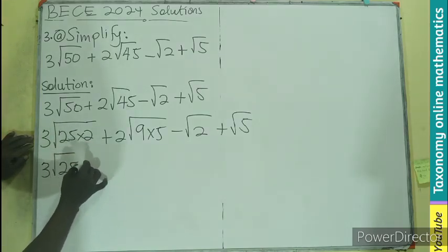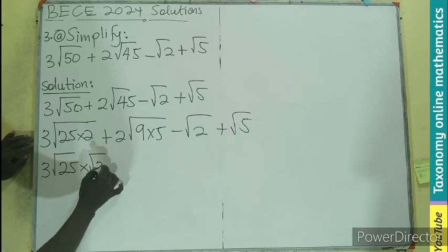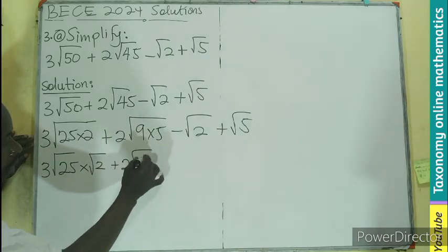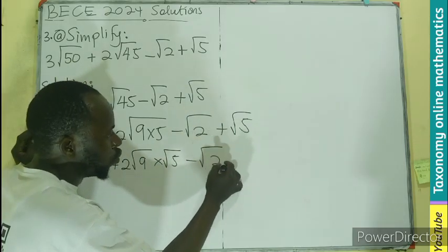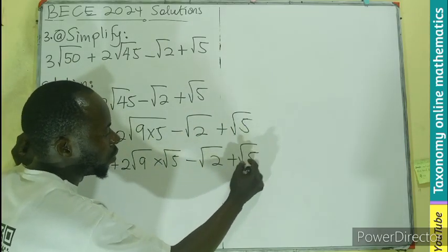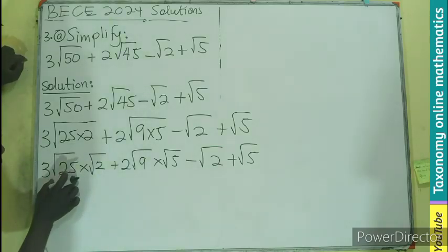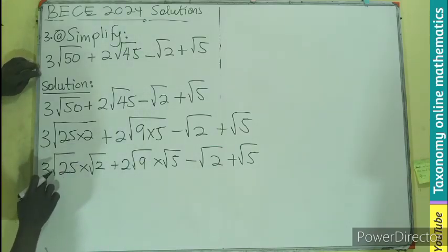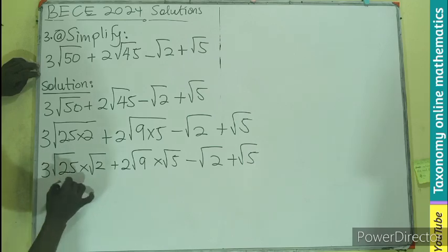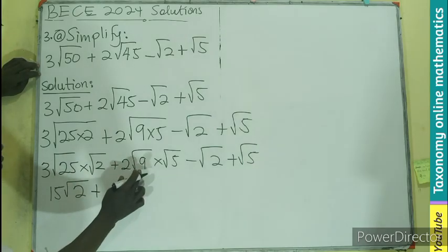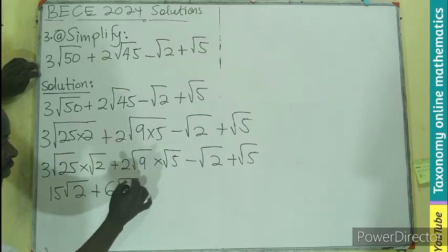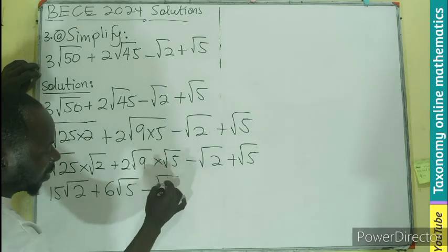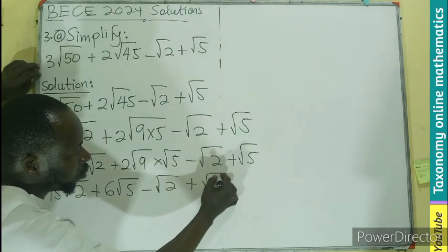We know that root 25 is 5. So 3 times 5 gives 15, meaning 3 root 50 becomes 15 root 2. The root of 9 gives us 3, and 3 times 2 is 6, meaning 2 root 45 becomes 6 root 5. So the expression becomes: 15 root 5 minus root 2 plus root 5.